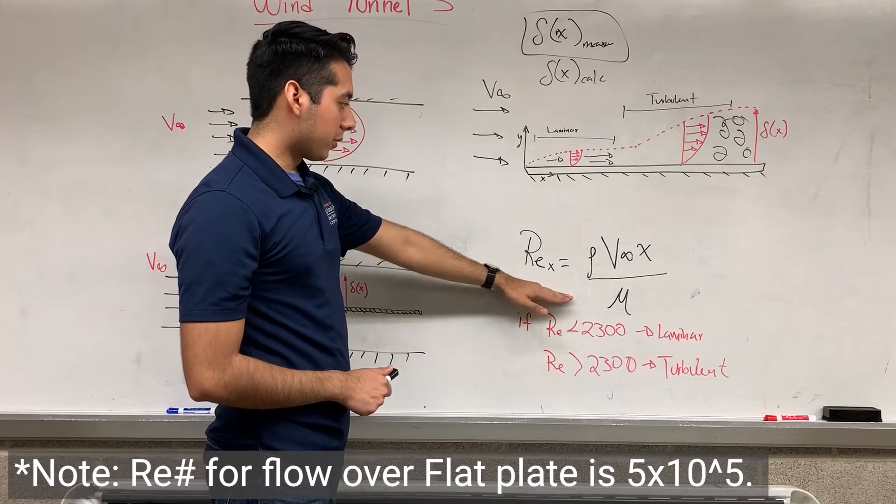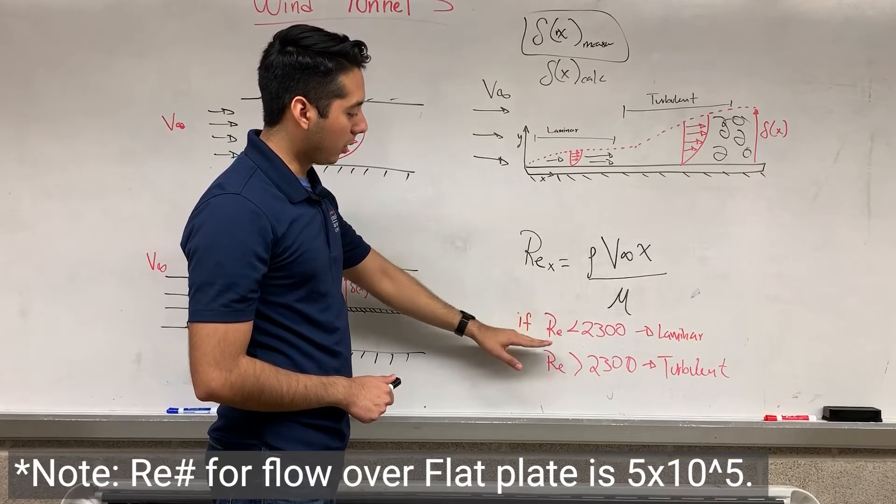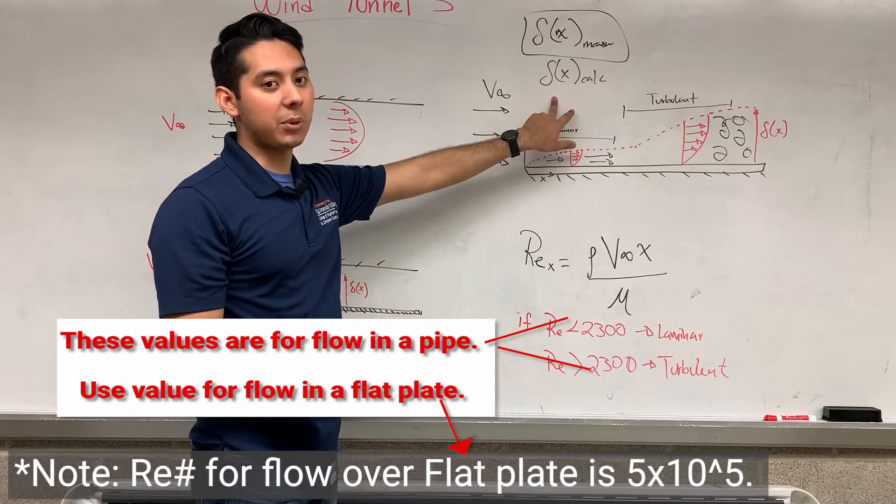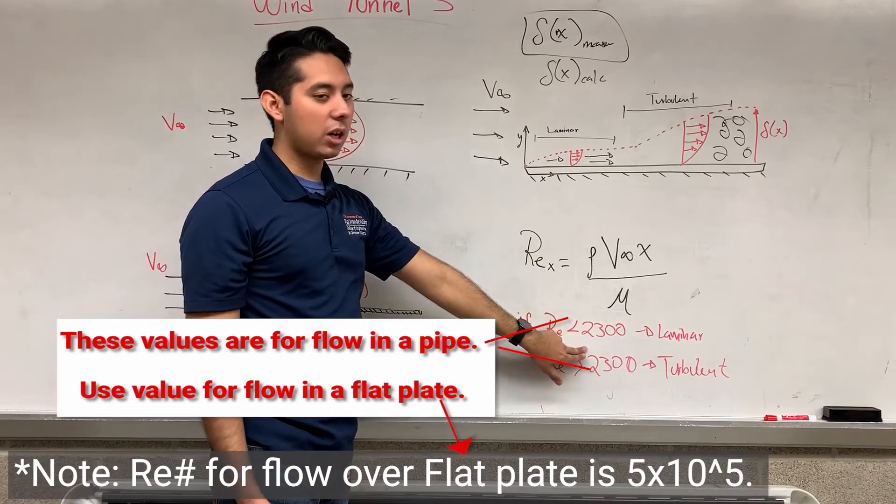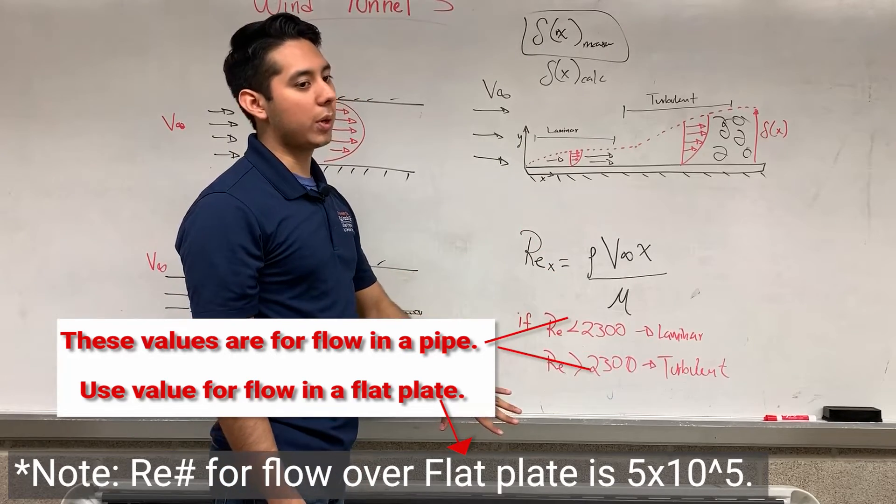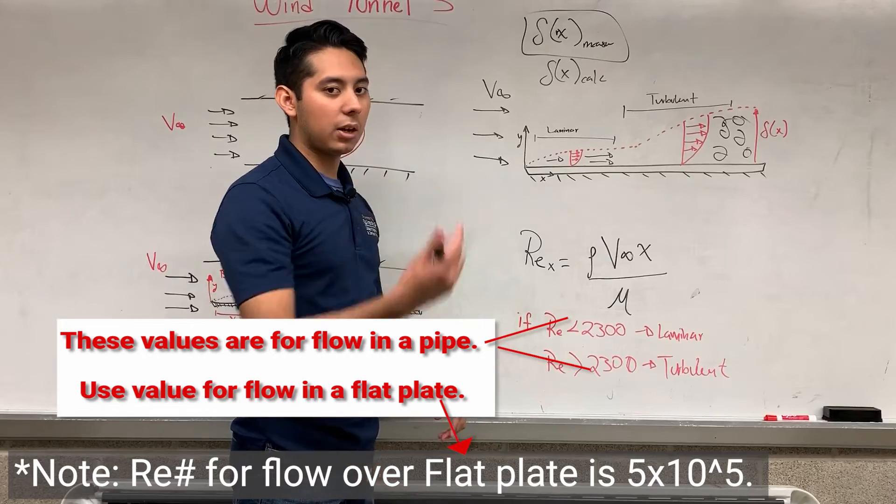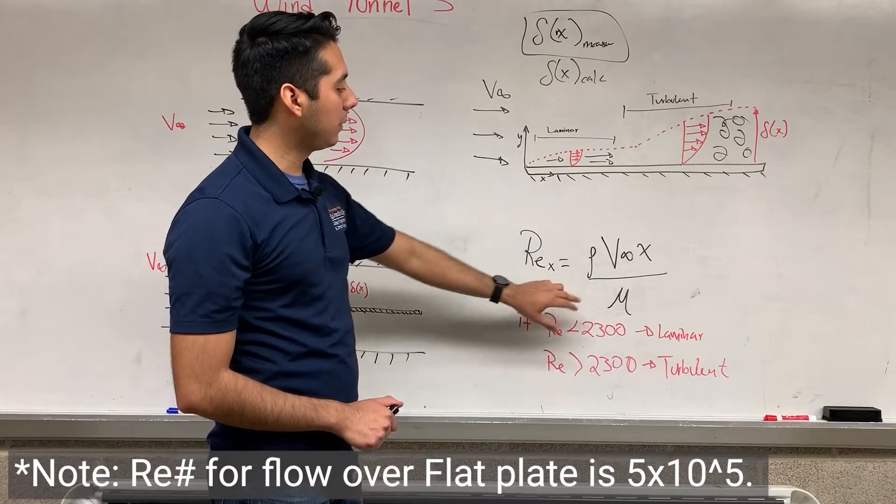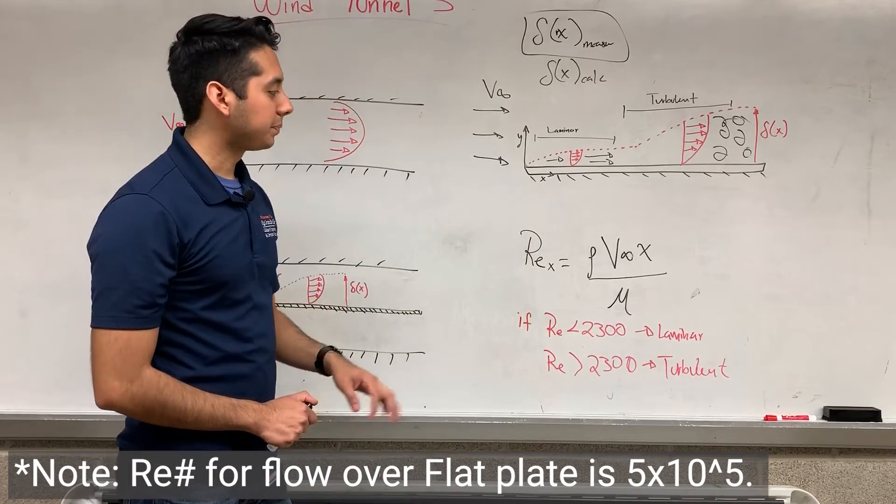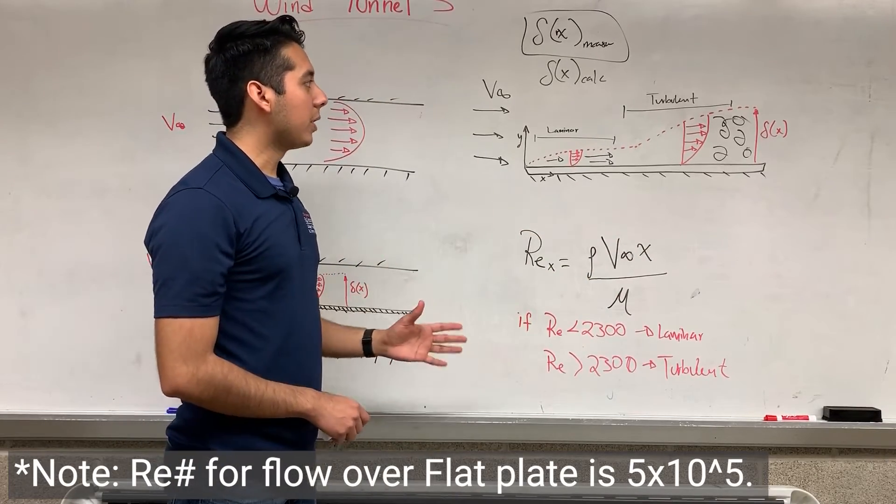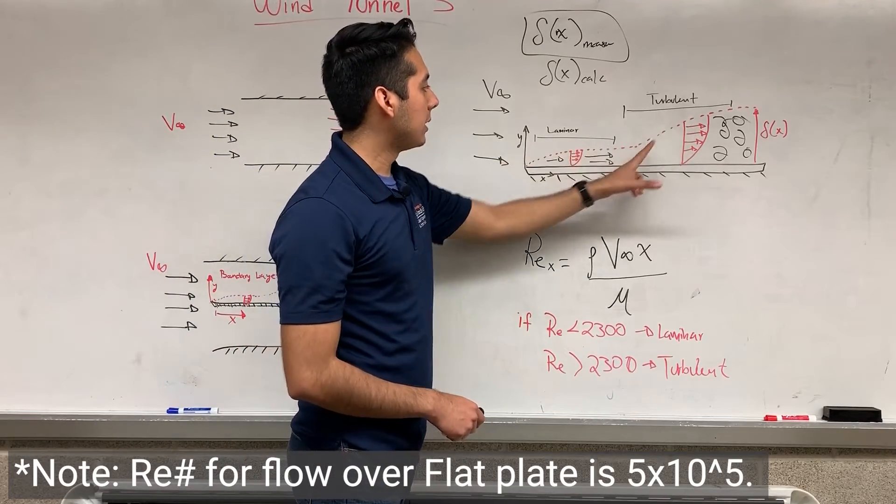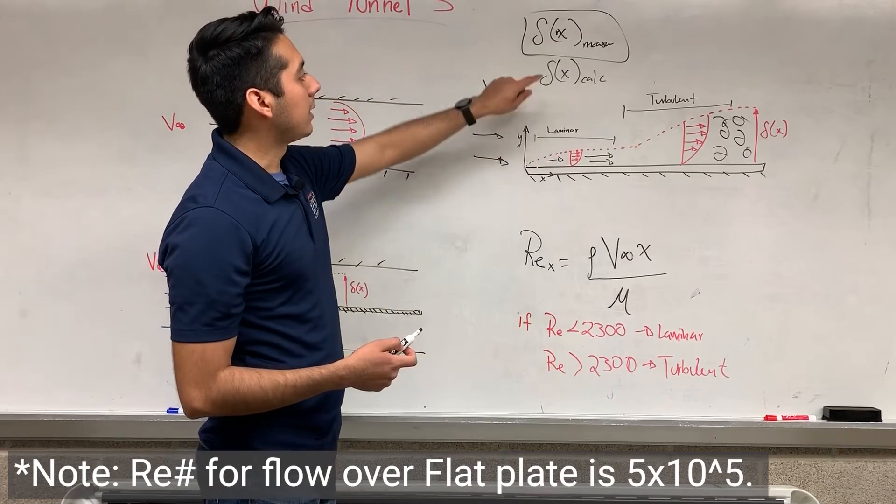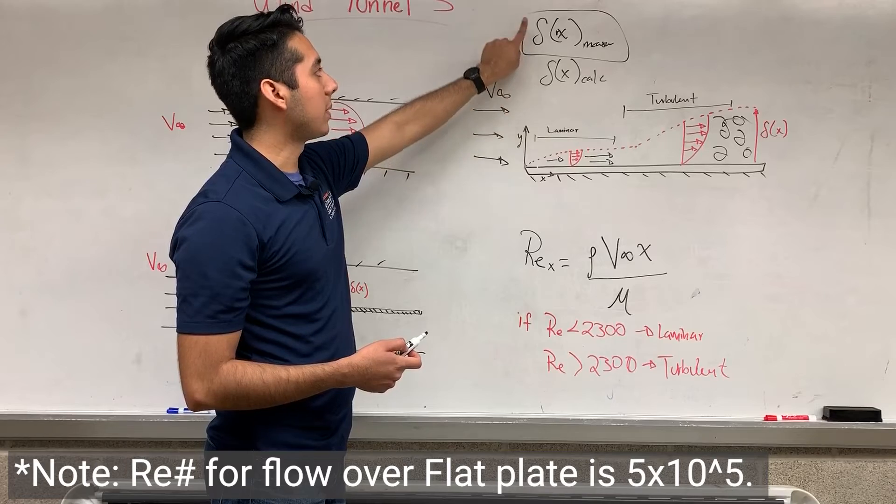So after you calculate your Reynolds number, if you get a value below 2,300, you will use the equation for the delta for the laminar one. If your value is way above 2,300, then you will use your equation for the turbulent one. All of them are in your procedures. It's really plug and chug. As long as you have your numbers, I will give you guys what your values will be to plot. From there, you guys will be able to plot on your notebook this shape based on what you have calculated.